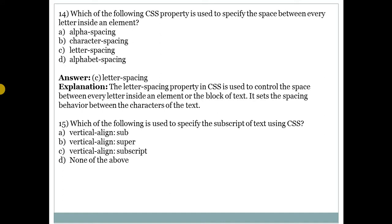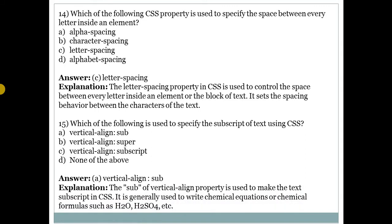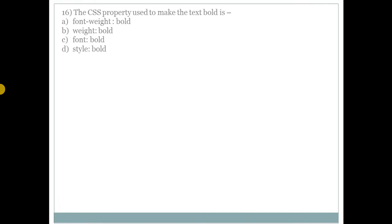Next question: which of the following is used to specify the subscript of text using CSS? Answer is A — vertical-align with value sub. The sub value of the vertical-align property makes text subscript in CSS. It is generally used to write chemical equations or formulas such as H₂O and H₂SO₄. Vertical-align: sub specifies subscript text in CSS.